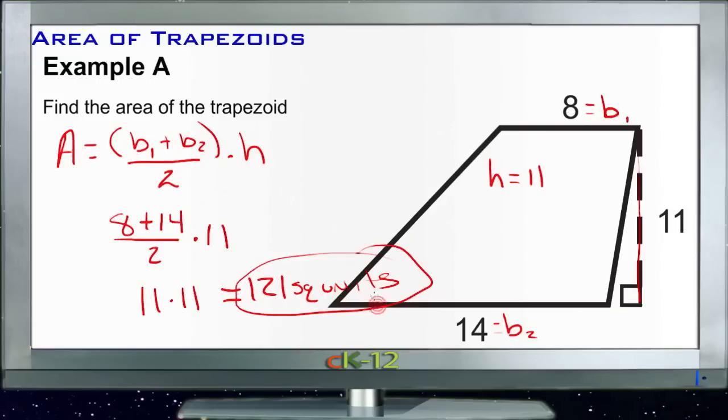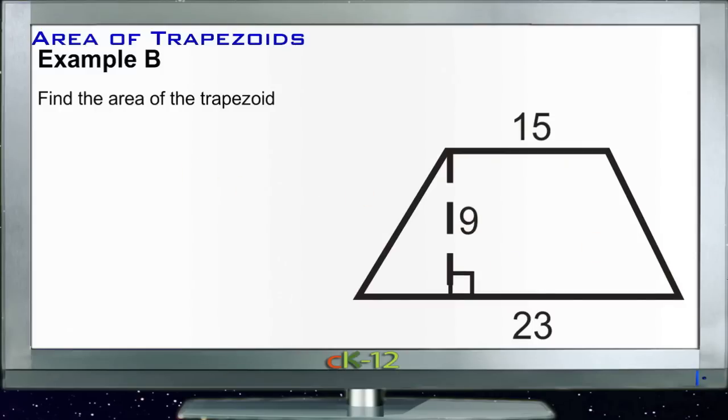That wasn't so rough. Alright, Example B: find the area of the trapezoid. So again, we're going to have area equals base 1 plus base 2 over 2 times h. Here our h is 9, our base 1 is 15, and our base 2 is 23.